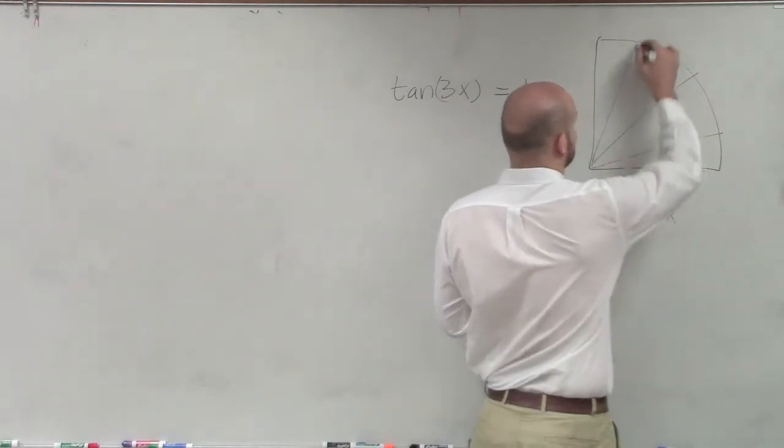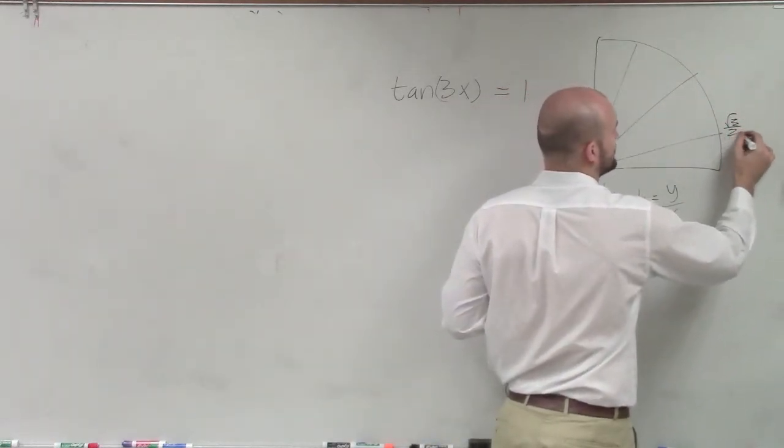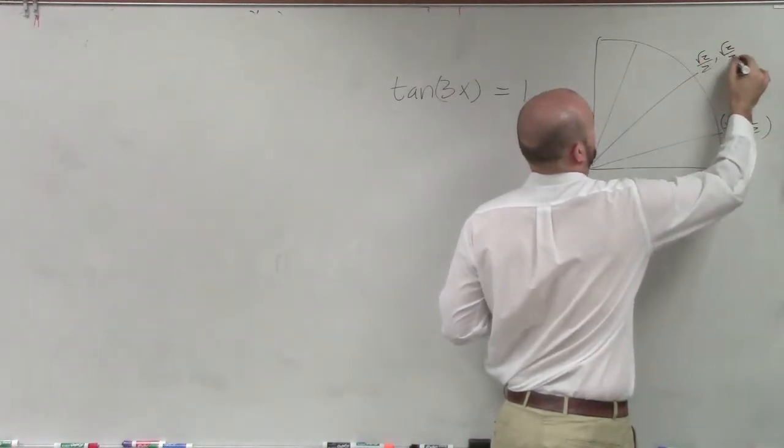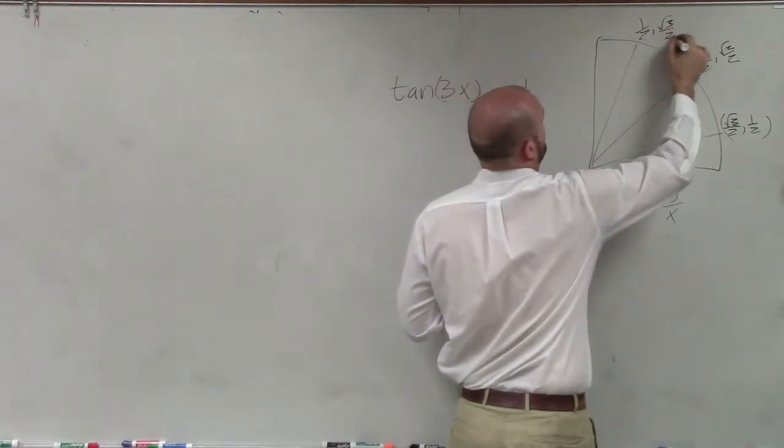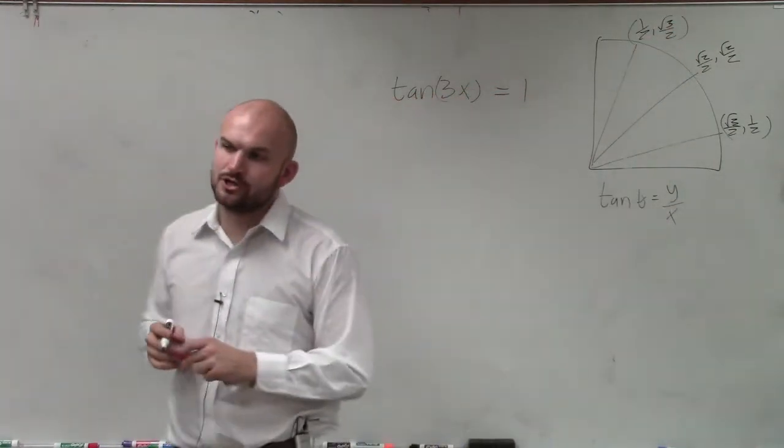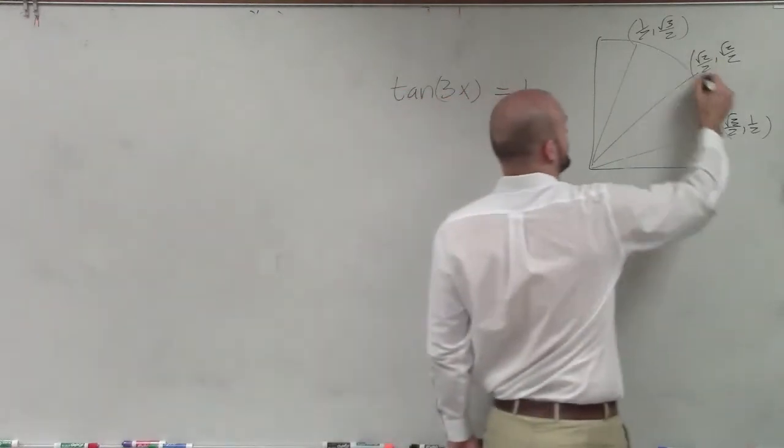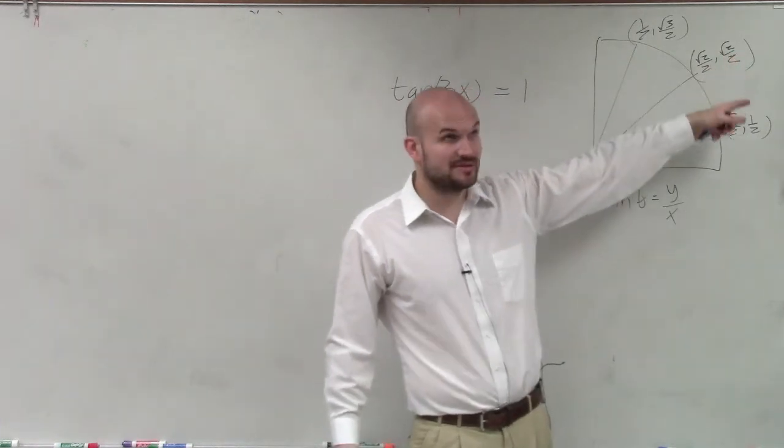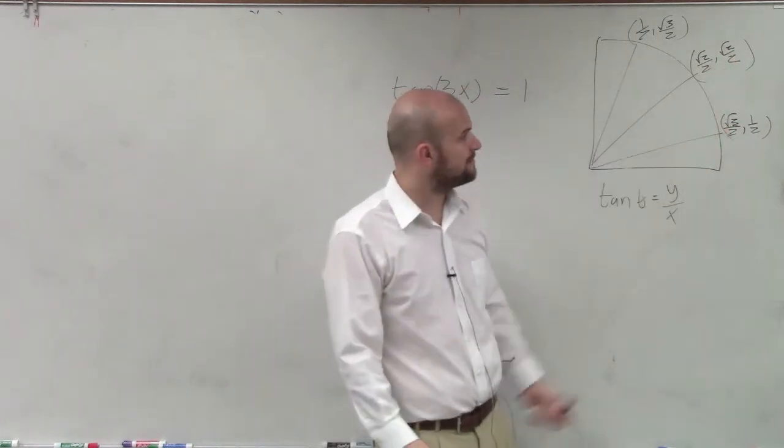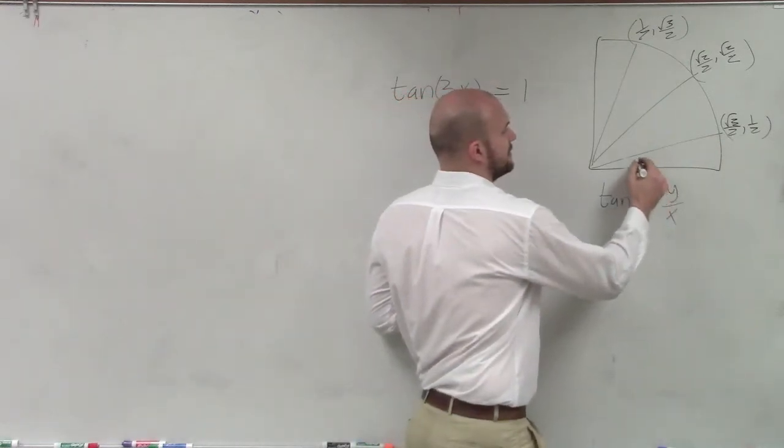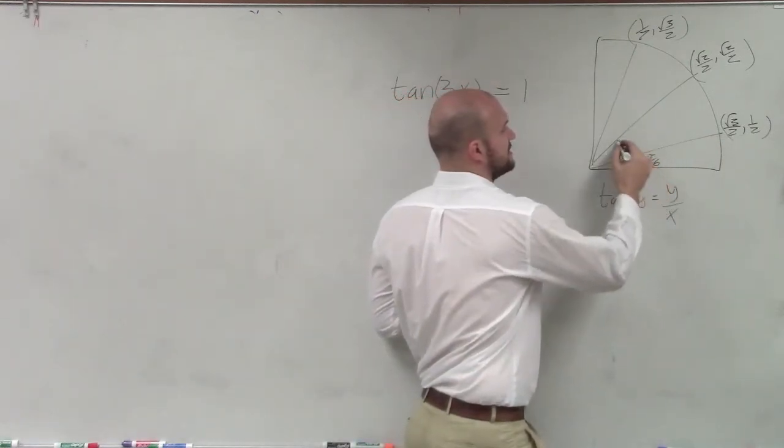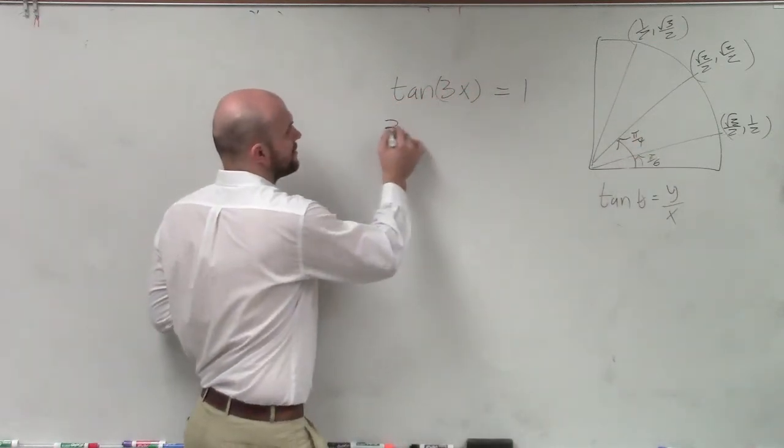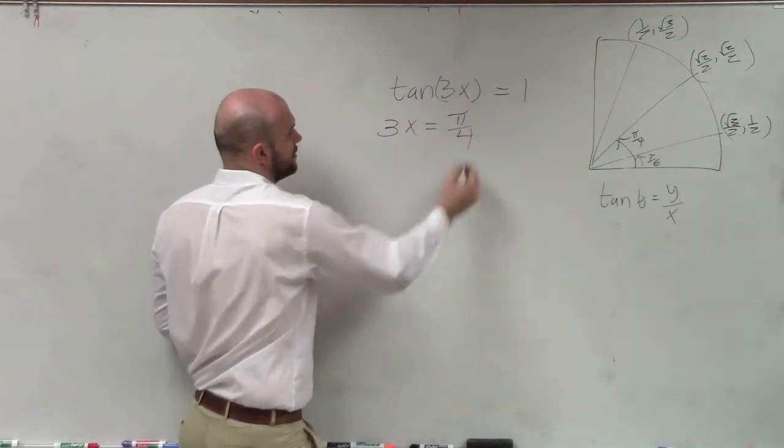So I look at my first quadrant. And by knowing these points of the first quadrant, I can see that there's only one ratio of y coordinate over x coordinate that's going to produce 1. It's going to be this angle right here, because √2/2 divided by √2/2 obviously just equals 1. So we need to remember, what is that angle? That's π/4. So therefore, I can say in this case, 3x equals π/4.